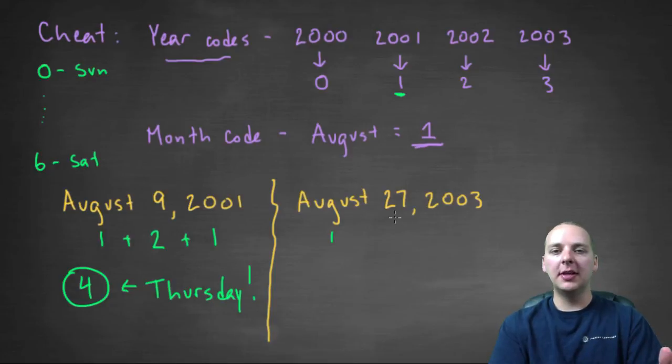The largest multiple of seven that's less than 27 is 21, with a remainder of six. And then 2003's year code is a three.